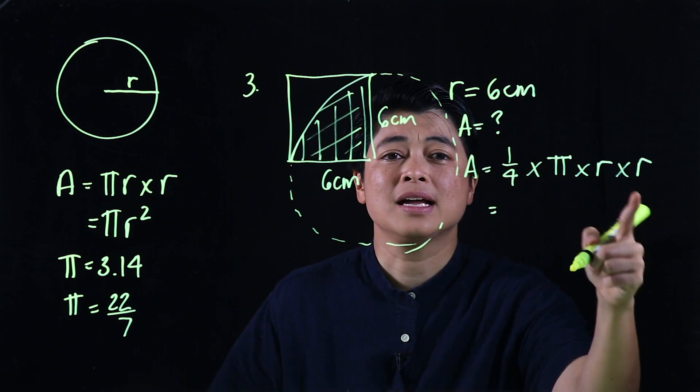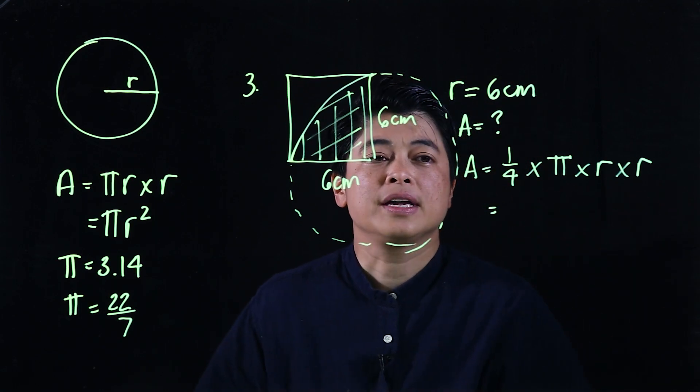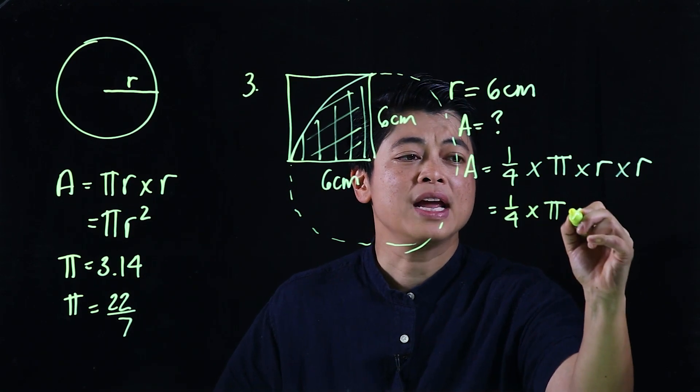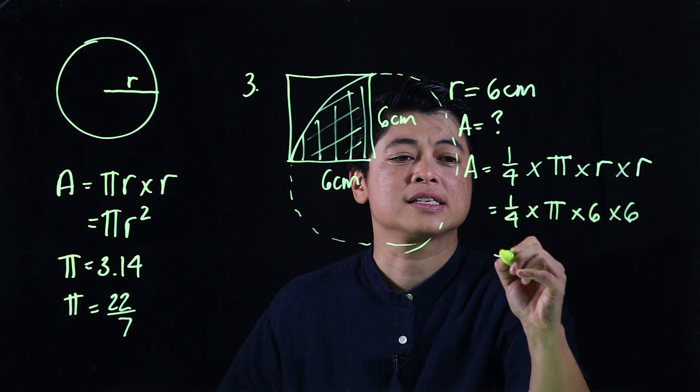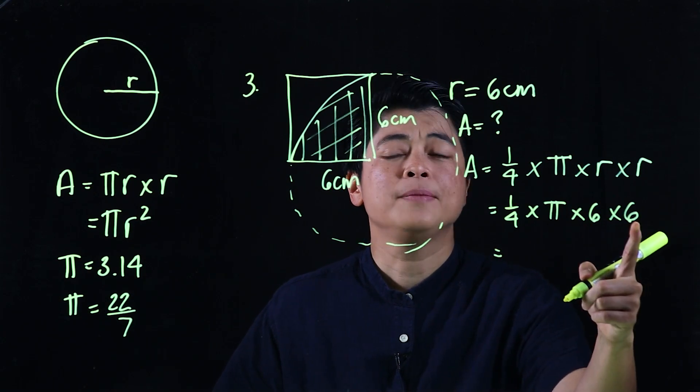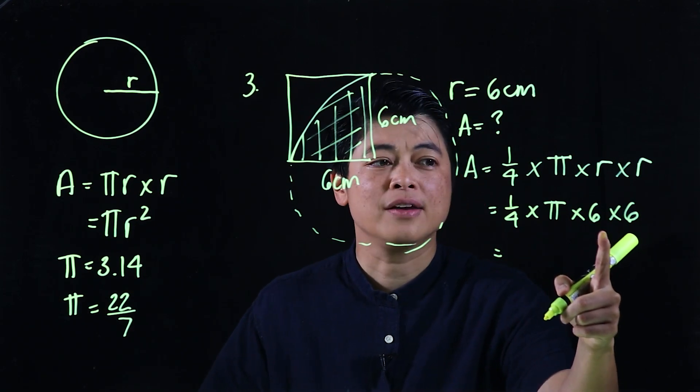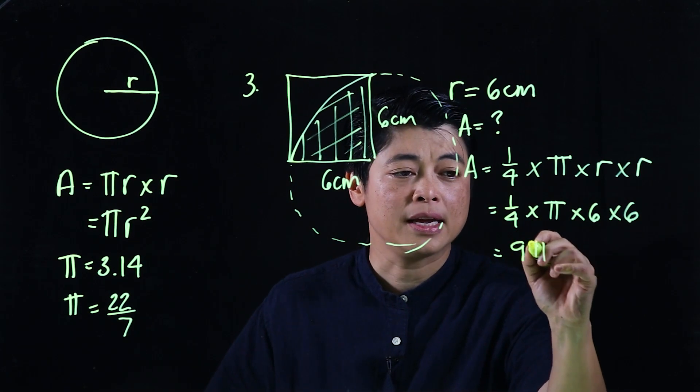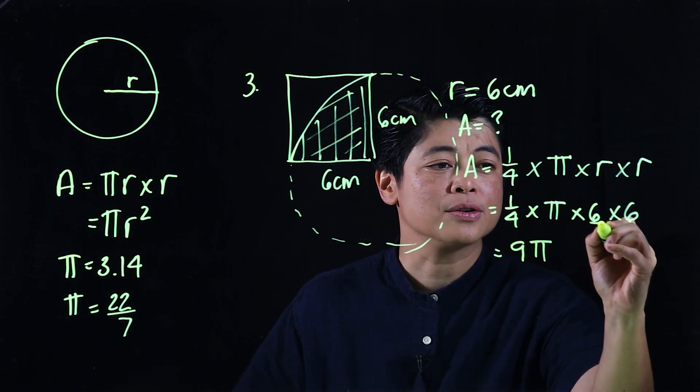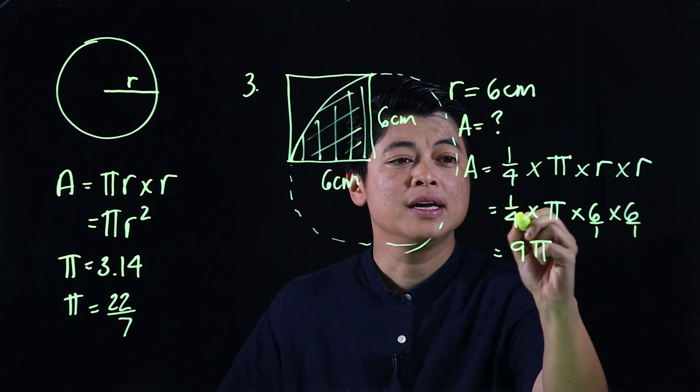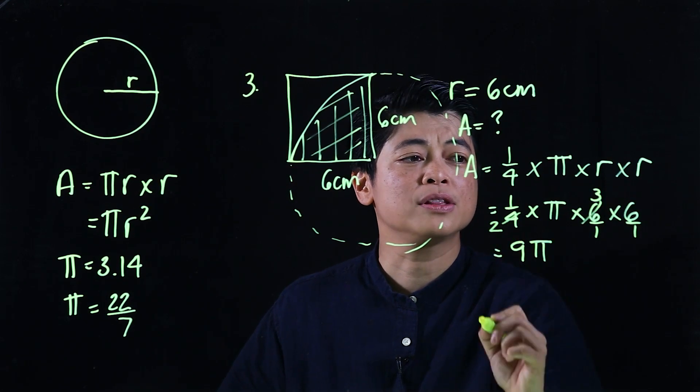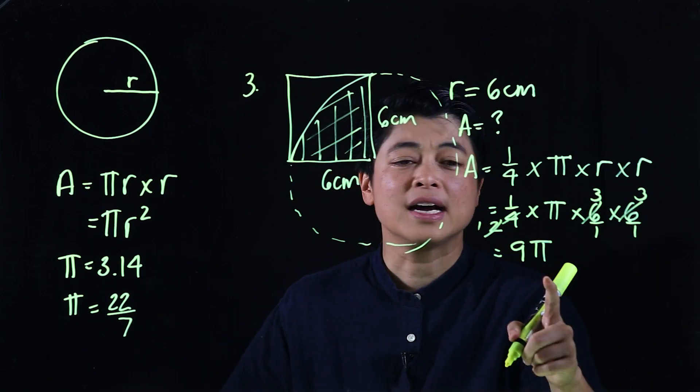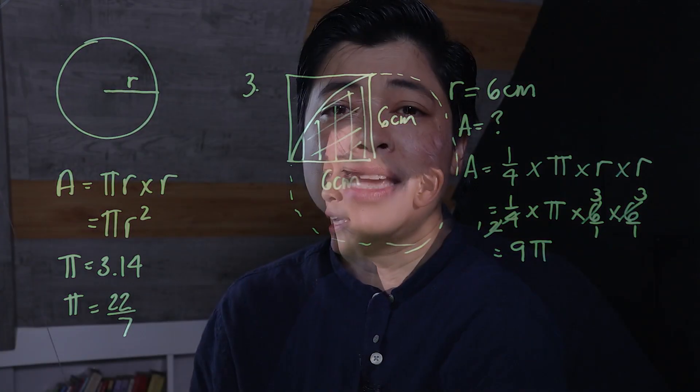So here we take one fourth, we keep the pi, the radius is six and another six. So if we multiply or if we cancel it should give us the same answer. So this is 36 divided by four is nine pi. But if I wanted to cancel, this is over one, this is over one, this cancels as a three and then we have a two, and then we cancel again, that's a one and we have a three which gives us nine pi.